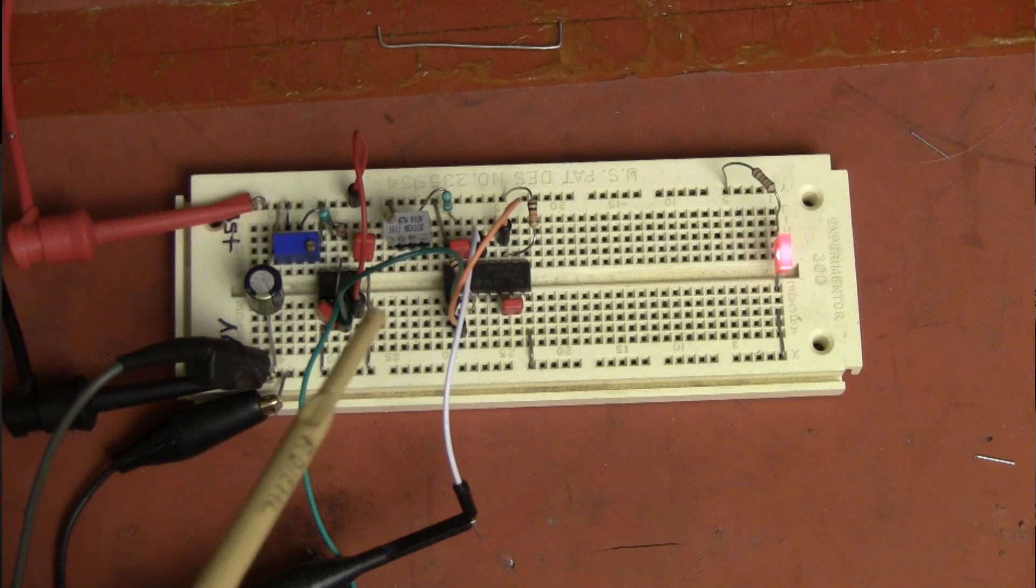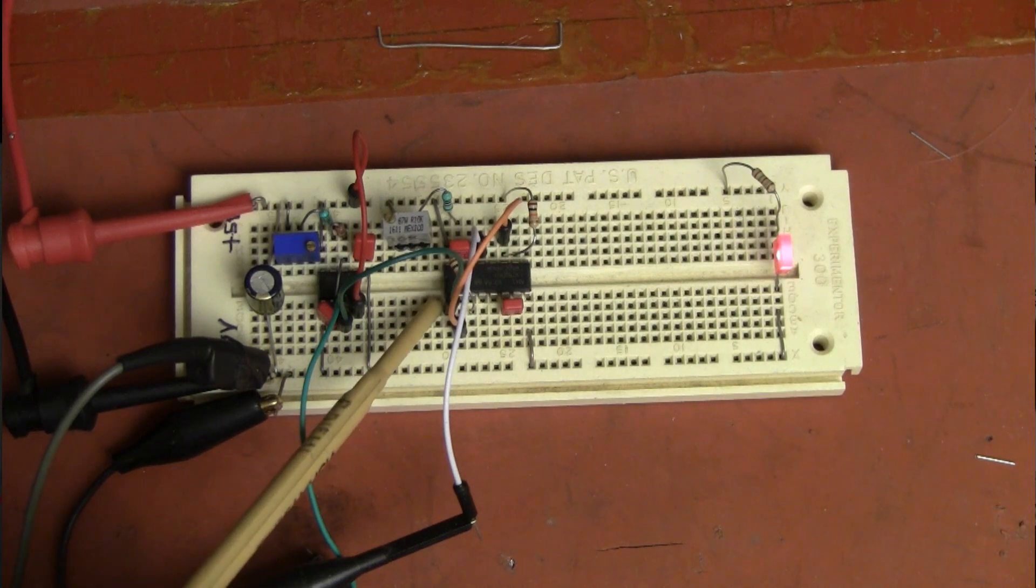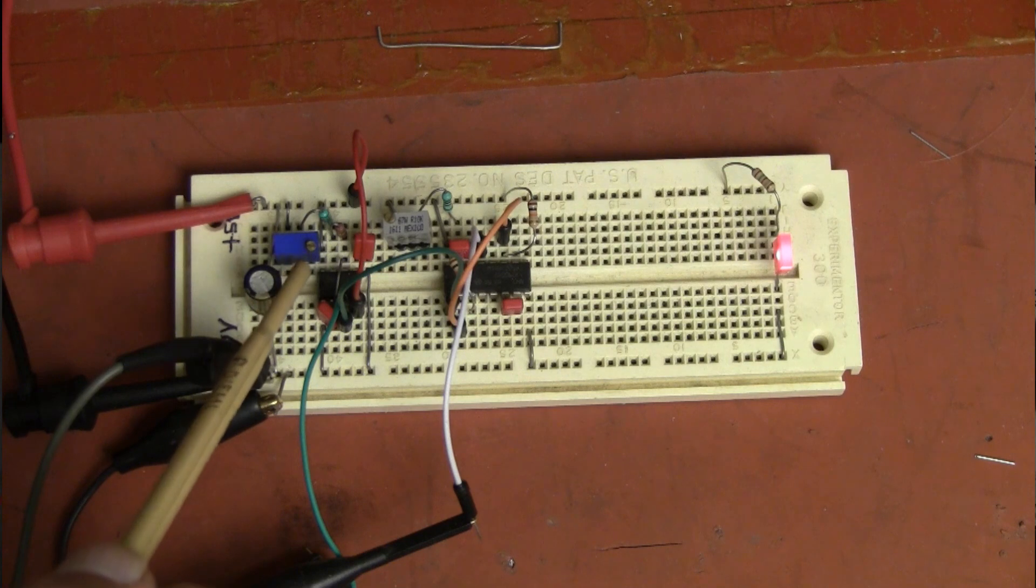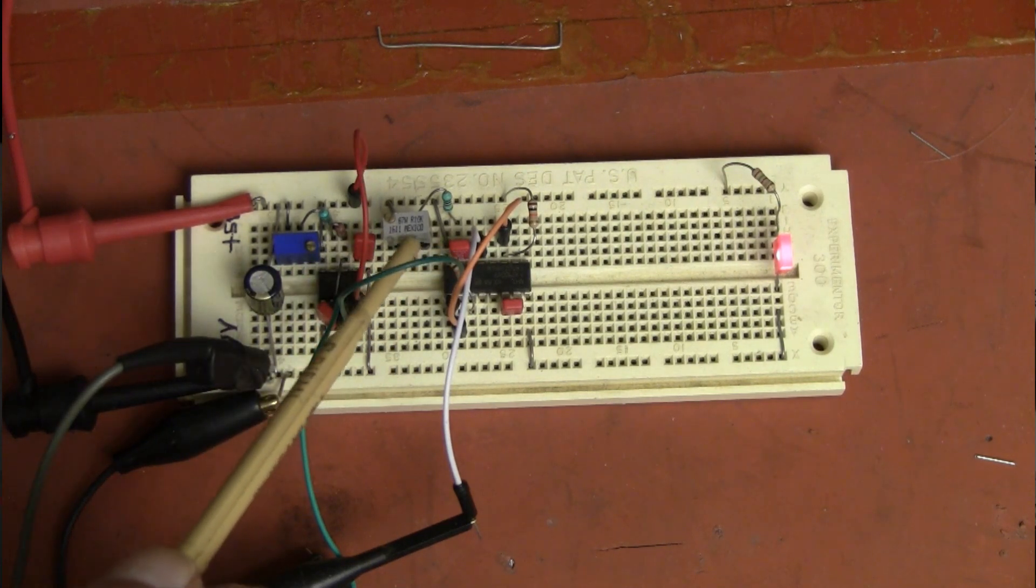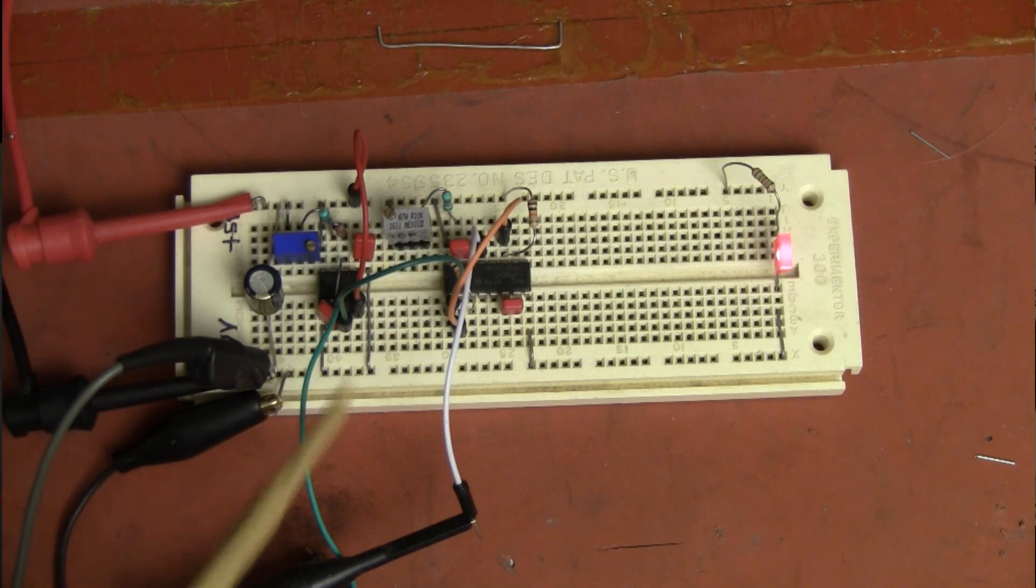Here's the test circuit constructed on a breadboard. The 555 is here. The dual one-shot is here. VR1, the frequency adjustment is here. And VR2, the one-shot time period pot is located here.